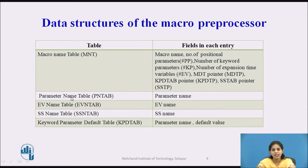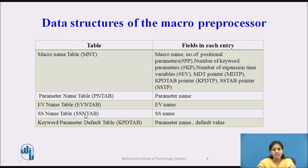The second table is the Parameter Name Table, represented as PNT, having only a single field: parameter name. The third table is the Expansion Time Variable Name Table, represented as EVN tab, with a single field: EV name. The fourth table is the SSName Table (sequencing symbol name table), also having a single field: sequencing symbol name.